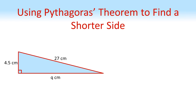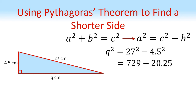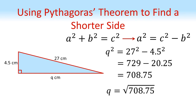Let's try another example where the shorter side is missing. We know that A squared plus B squared equals C squared, but as we're missing a shorter side, we're going to rearrange it so it's A squared equals C squared minus B squared. So Q squared equals the hypotenuse 27 squared minus 4.5 squared, which is 729 minus 20.25, which equals 708.75. Square rooting this gives us an answer of 26.6 centimetres to one decimal place. Again, to quickly check, that's smaller than the hypotenuse — it looks like a sensible answer.